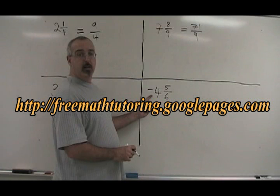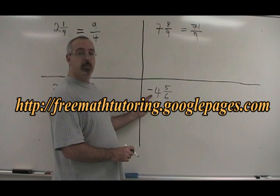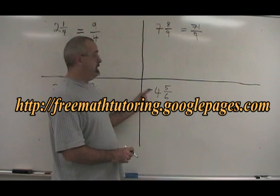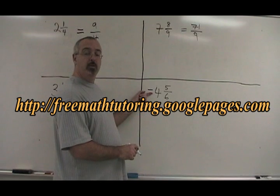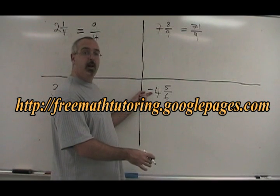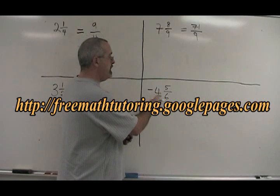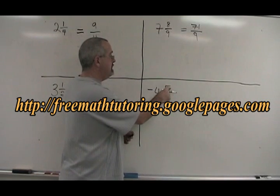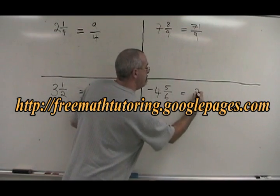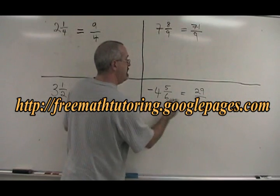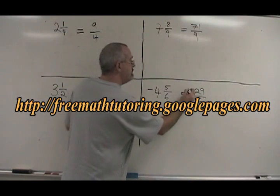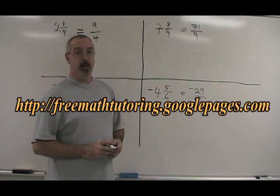What if we have a negative mixed number, and we want to convert it to an improper fraction? What we do is we ignore the negative sign while we do our operation, and then we apply the negative sign to our answer. 4 times 6 is 24, plus 5 is 29. The denominator stays the same. It was negative, so our improper fraction is negative.